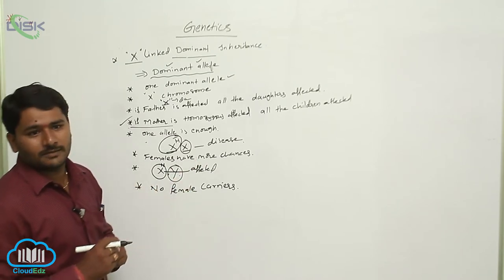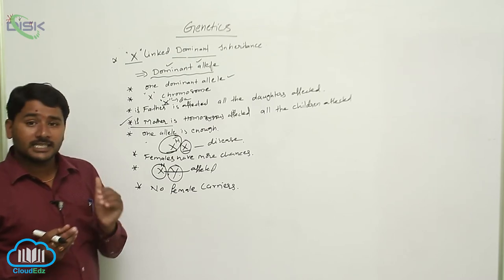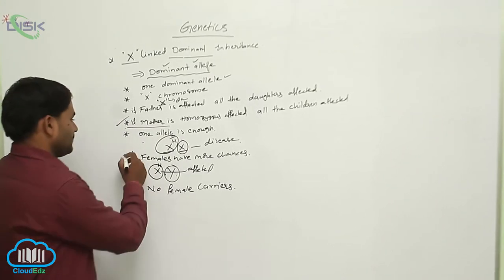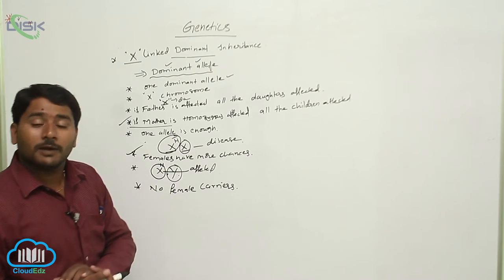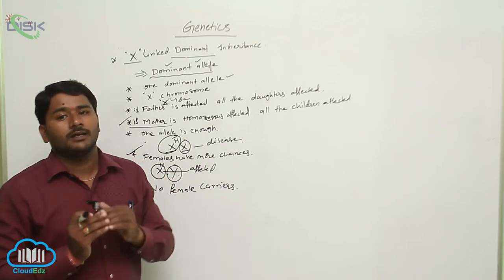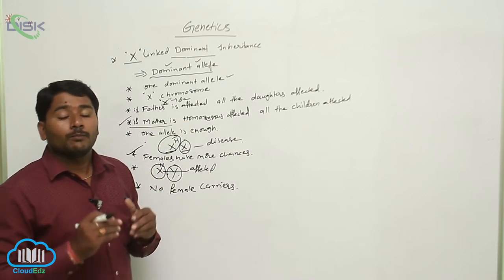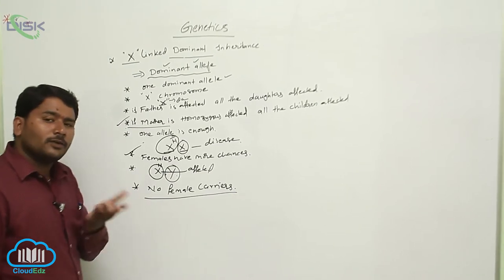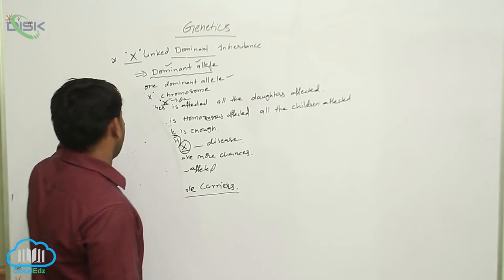Females have more chances for the disease because they receive an X chromosome from both the mother and the father — two chances to inherit the X chromosome. The intensity of the disorder is greater in males because in females, one dominant and one recessive allele allows some complementation, whereas in males there is no compensating allele on the Y chromosome. There are no female carriers in X-linked dominant disorders because even one dominant allele in a female causes the disease.